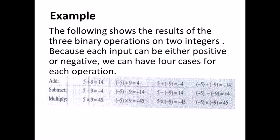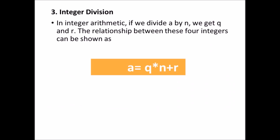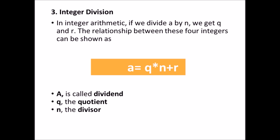Integer division. In integer arithmetic, if we divide an integer A by another integer N, we get two integers Q and R. This is the relation between four integers: A equals Q times N plus R. In this relation, A is called the dividend, Q the quotient, N the divisor, and R the remainder.